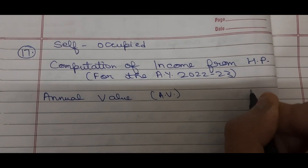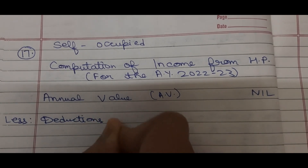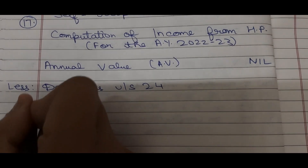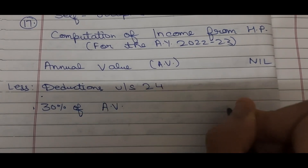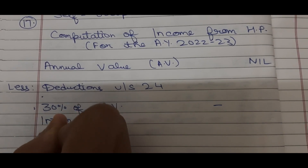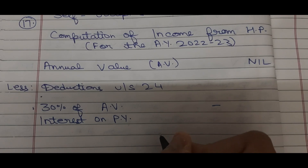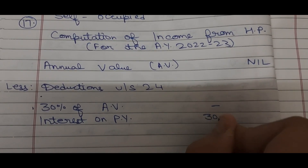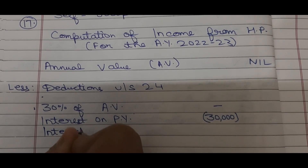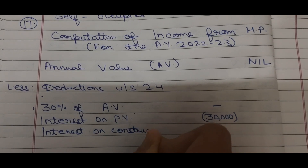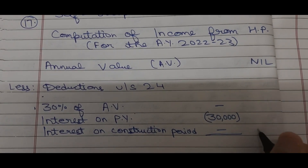In the self-occupied case, we have deductions under Section 24. First, 30% of annual value — since annual value is nil, this is nil. Second, interest on loan for the previous year. In the question, the interest is Rs. 32,000, but in the self-occupied reconstruction case, the limit is Rs. 30,000. So we take Rs. 30,000, giving a loss of Rs. 30,000.